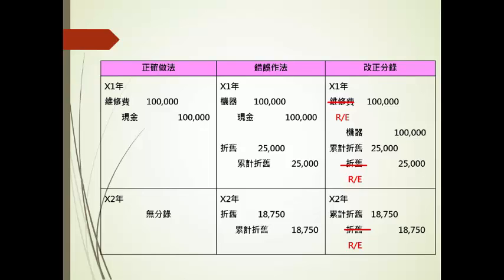我们把正确的和错误的做一个比对来进行改正。X1年应补上借维修费10万，贷方现金10万已对，但机器不应该有，所以贷机器10万冲销。折旧正确做法是没有的，所以借累计折旧贷折旧25,000冲销。第二年同样，改正分录是借累计折旧贷折旧18,750。